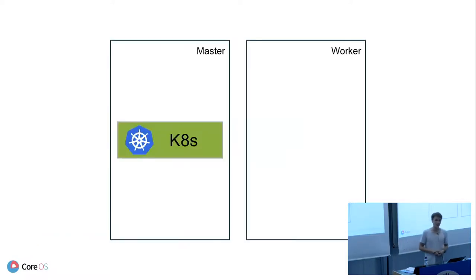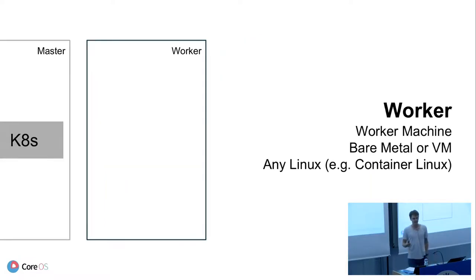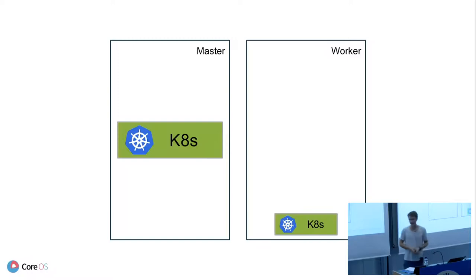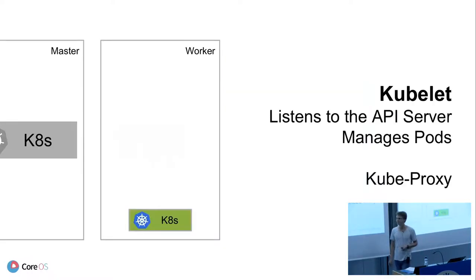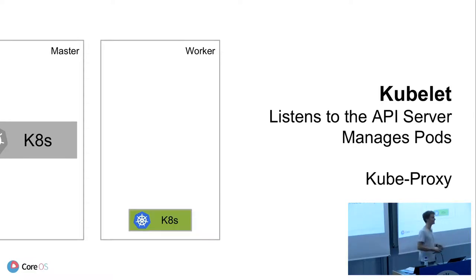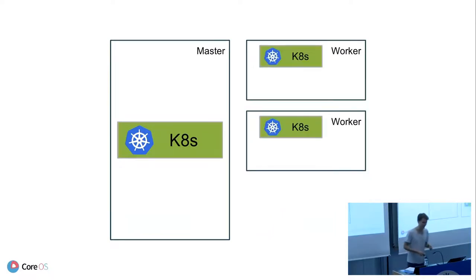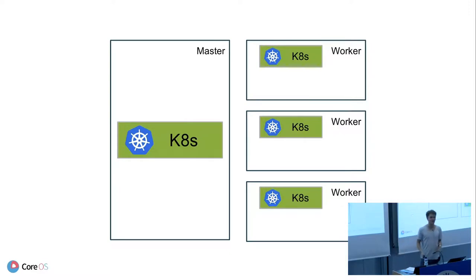Running one master is boring, so we buy more servers — a worker. The worker, again, is just a bare metal machine running any Linux, and that's actually where our workload runs. You can still run workload on the master node, but you probably want workers when running Kubernetes at scale. On that worker, we deploy a little Kubernetes — called the kubelet. It listens to the big Kubernetes, and whenever the big Kubernetes says 'please deploy something here,' the kubelet says okay and starts that up on your worker. Let's have a couple of workers — and ta-da, we have our infrastructure.